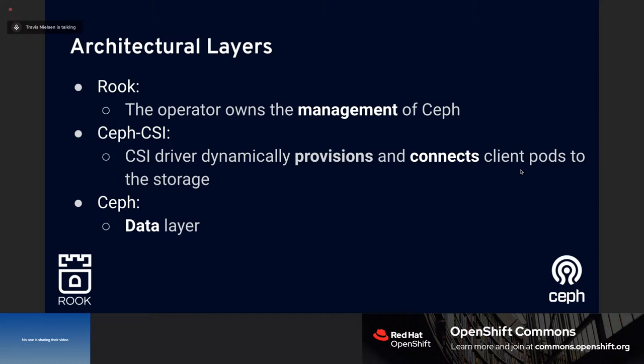When the Rook project started, we saw that Ceph is really powerful with all block, object, and file storage in one architecture, and wanted to bring that to Kubernetes and OpenShift in a simple, integrated way. Rook's job is to deploy and own the management of Ceph. The CSI driver is what allows dynamic provisioning of storage from Ceph and attaches it to client pods. The final layer is the Ceph data layer - once storage is set up and attached, Rook and the CSI driver are out of the picture and data goes purely through Ceph daemons.